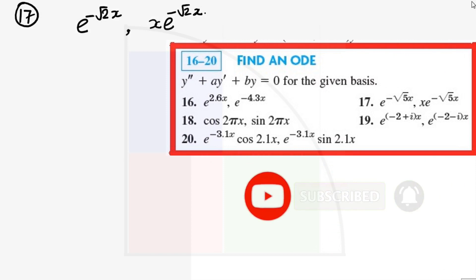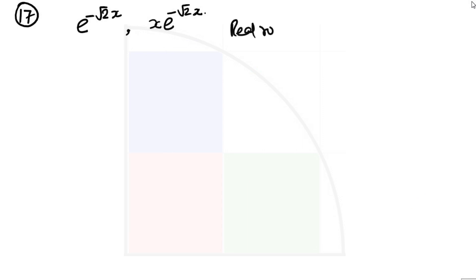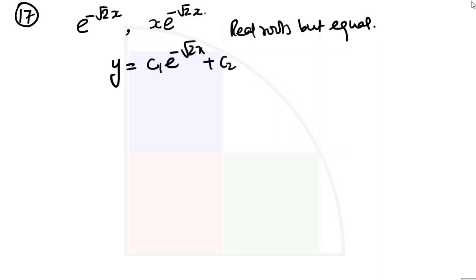Looking at the two roots of the second order ordinary differential equation, it appears that this is the case of equal and real roots — real roots but equal. Because e to the power minus square root of 2 times x is common at both places, which means the solution is written as c1 e to the power minus root 2 x plus c2 x e to the power minus root 2 x. In this case both roots r1 and r2 are actually minus square root of 2.